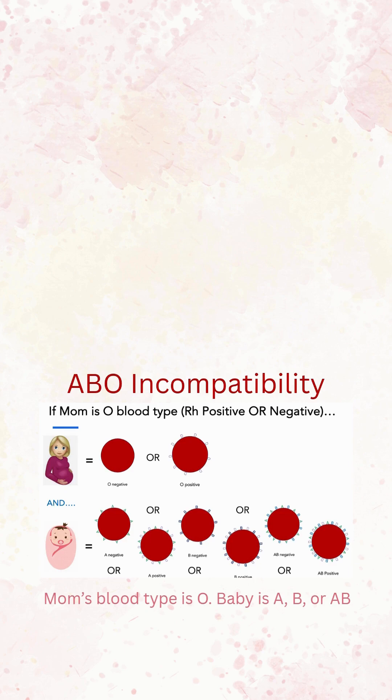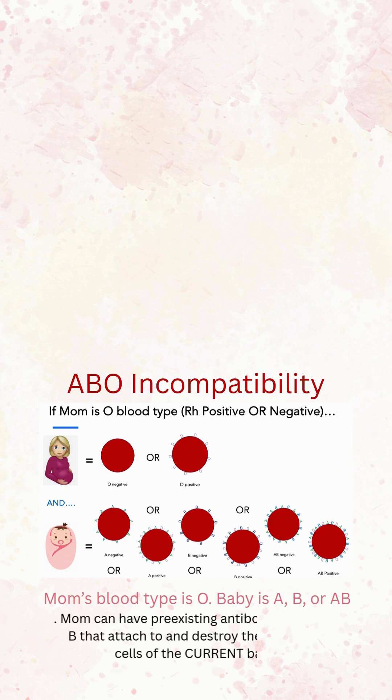The baby could be A positive, A negative, B positive, B negative, AB positive, or AB negative. The mom could have pre-existing antibodies to the A or the B antigen that then could attack and destroy the red blood cells of the current baby.